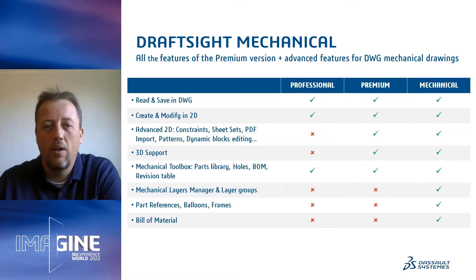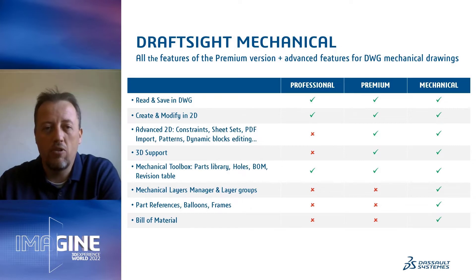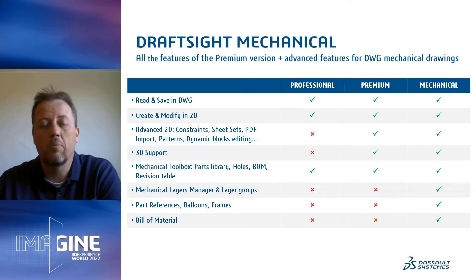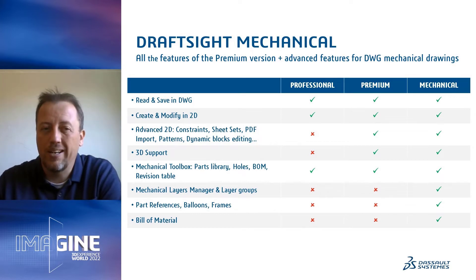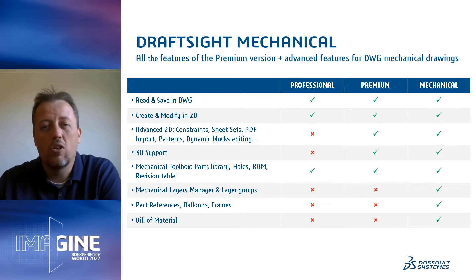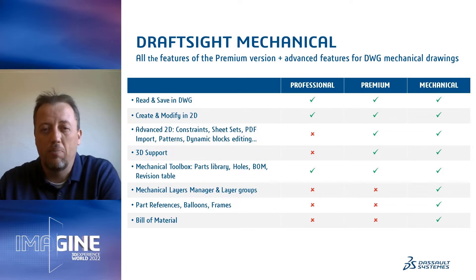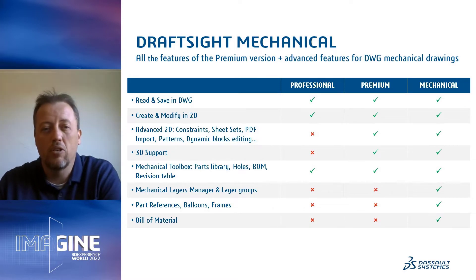To summarize: the Professional version of DraftSight brings essential tools to create and modify 2D drawings in DWG format. The Premium version goes further with productivity tools such as dynamic block editing, sheet sets, and PDF import, and also includes 3D solid modeling. Both versions include some mechanical design features, but without the ability to update drawings previously created with other mechanical 2D CAD solutions — which is what we would like to show you now.